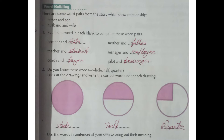Let us see number A from Word Building: put one word in each blank to complete the word pairs. The first one is brother and sister — in life classes I have told you this before, but once again: brother and sister. Similarly, the pairs are mother and father, teacher and students, manager and employee, coach and player, pilot and passenger. These words come in pairs.